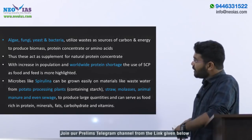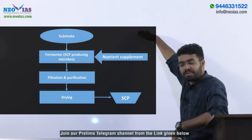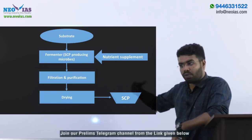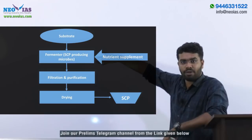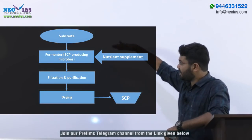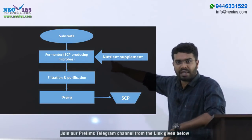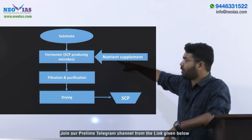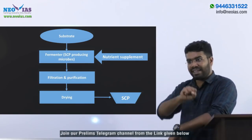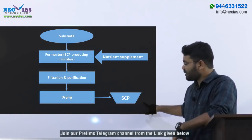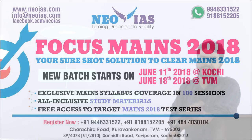Looking at the schematic diagram: we have the substrate, which is the wastewater or whatever we are taking to cultivate the organism. That substrate will have anaerobic bacteria or a fermenter where the SCP-producing microbes will grow. With nutrient supplements — such as starch in the case of potato processing industry — filtration and purification happens, and then the SCP is taken out, dried, and used as a single cell protein food supplement.